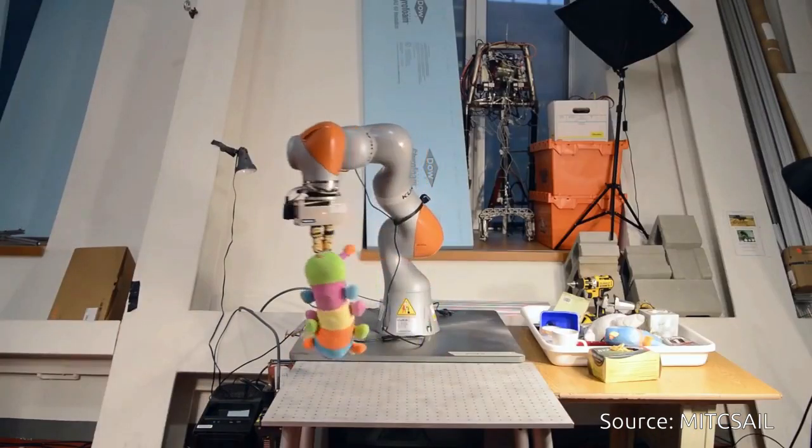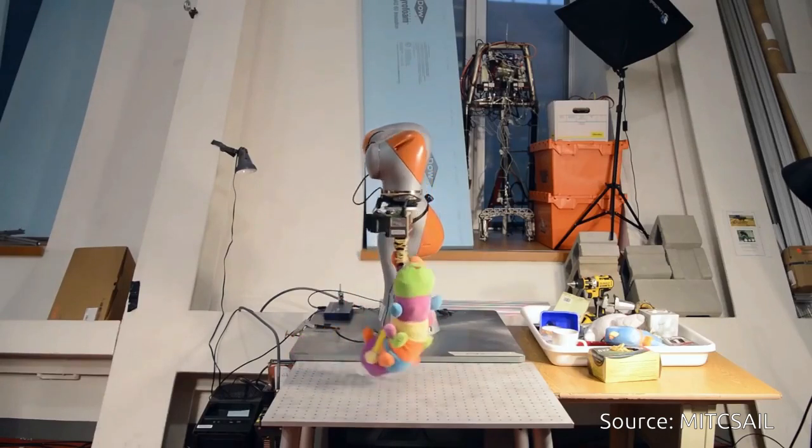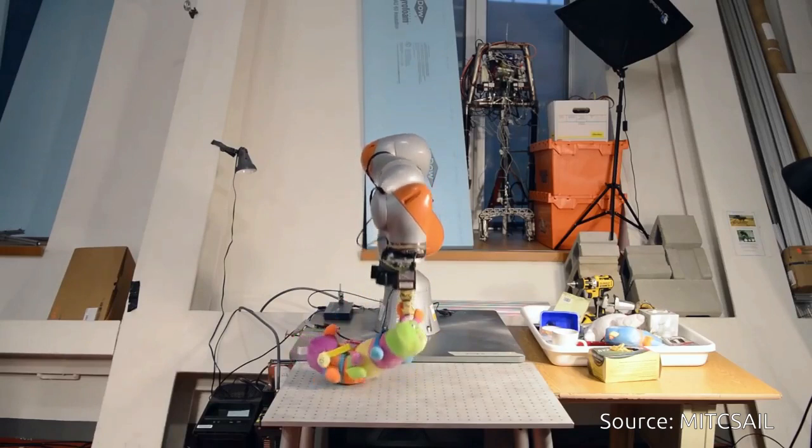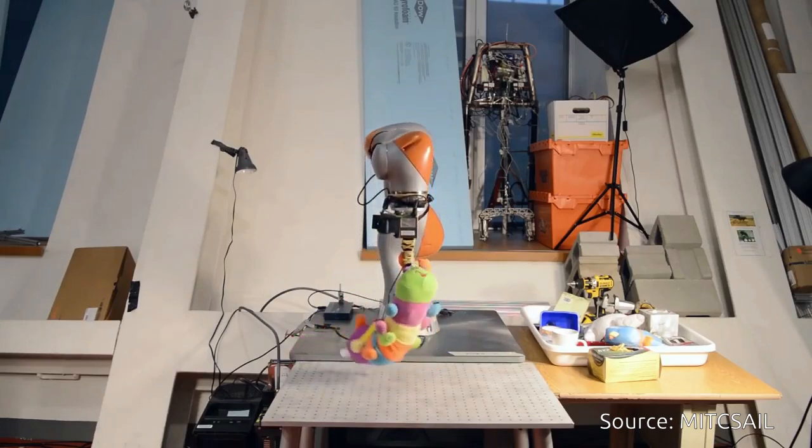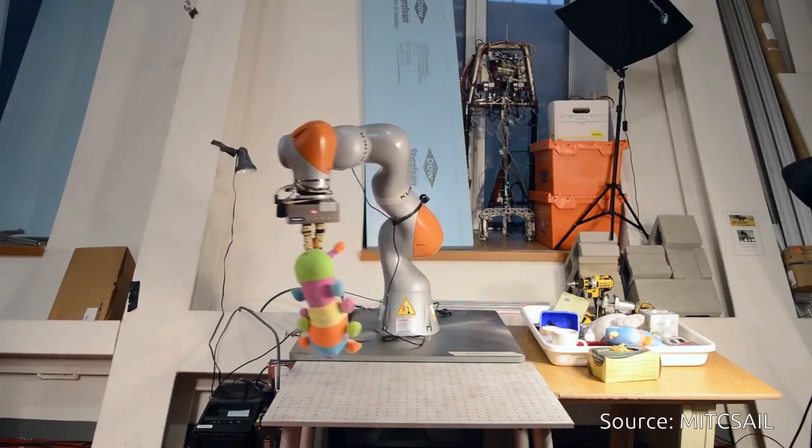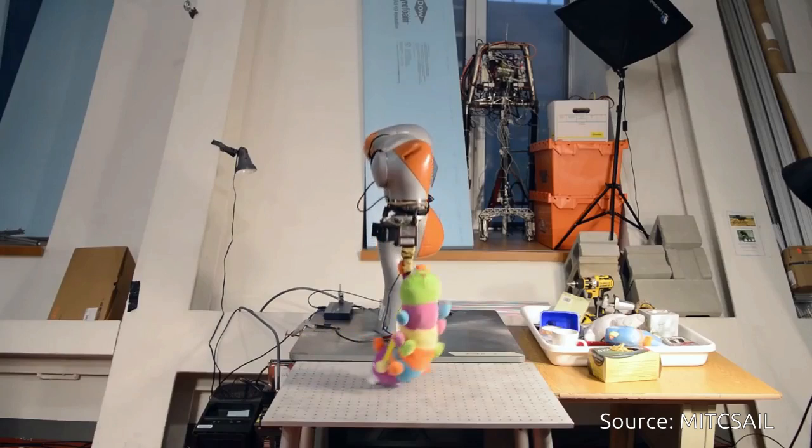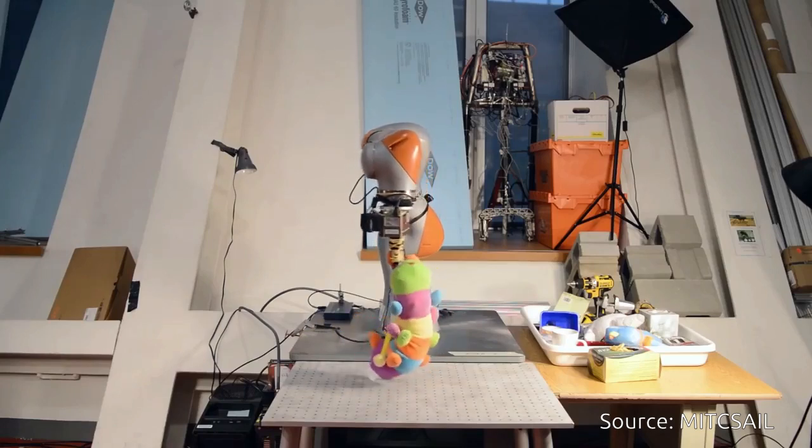In one set of tests done on a soft caterpillar toy, a KUKA robotic arm powered by DON could grasp the toy's right ear from a range of different configurations. This showed that, among other things, the system has the ability to distinguish left from right on symmetrical objects.